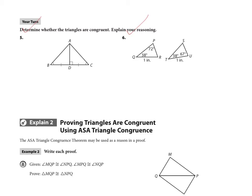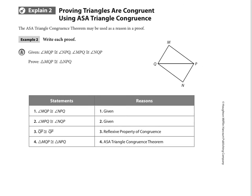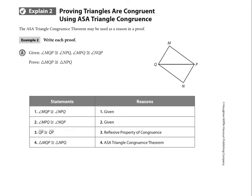As we move on to the next part of this video, we're going to Explain 2, and we're going to be talking about proving that triangles are congruent using the angle-side-angle congruence theorem. Anytime we're using a proof, remember that we're talking about a two-column format here, so we've got our statements and our reasons, left and right columns.